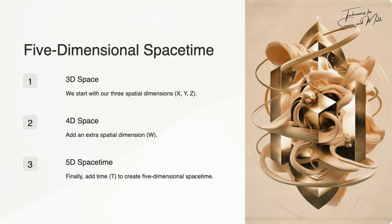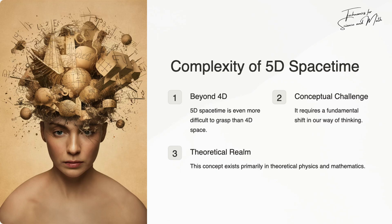What happens if we add time to this? If we take the three spatial dimensions x, y, z, add an extra spatial dimension, and then add time, we get five-dimensional spacetime. This concept is even more difficult to grasp.